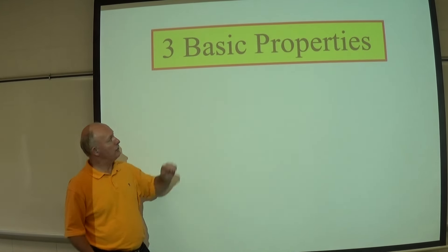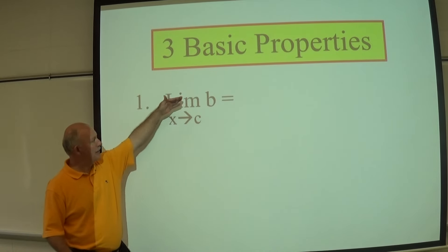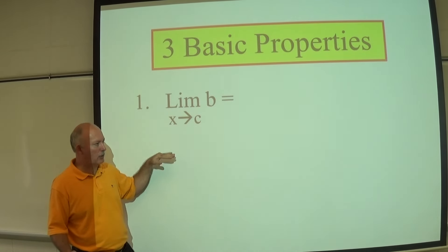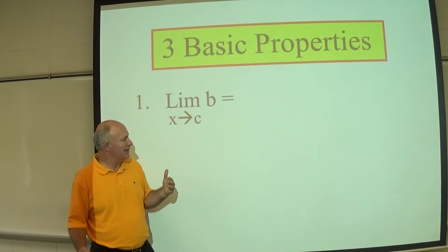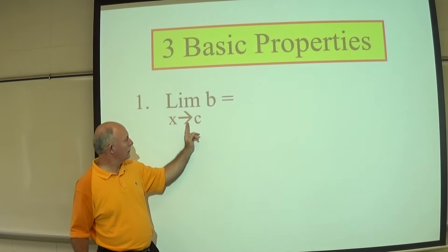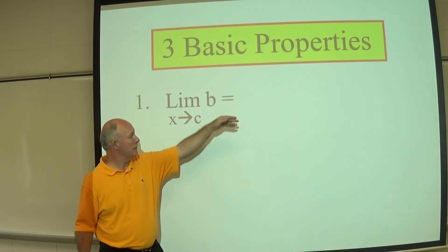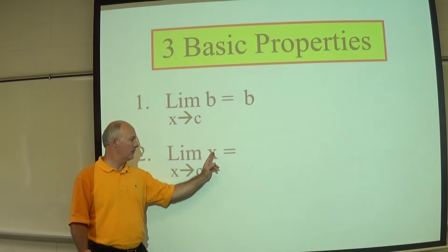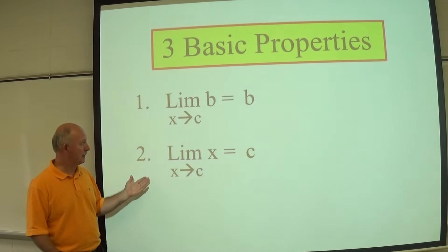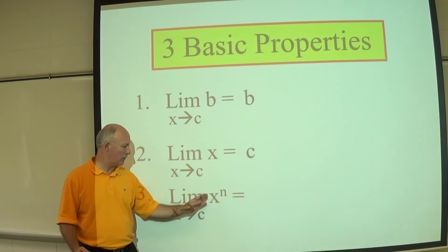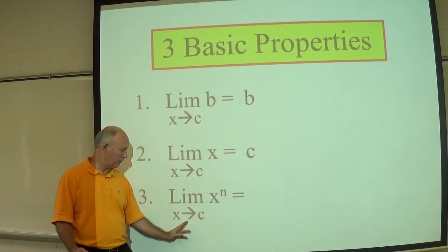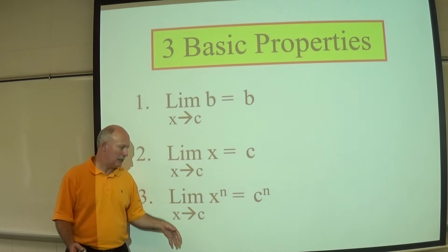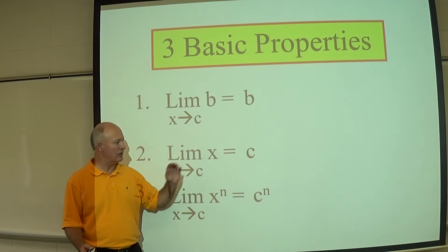Now there are three basic properties of limits we need to know. The first: the limit of a constant B as X approaches C is simply B — think of the function Y equals some constant number, so no matter what X approaches, the Y value is always that same number. The second: the limit as X approaches C of X is C — just direct substitution. The third: the limit as X approaches C of X to the N is C to the N — again, substitute C in for X.